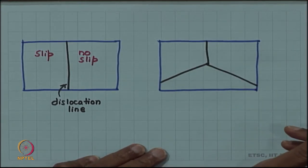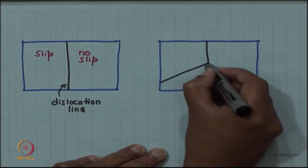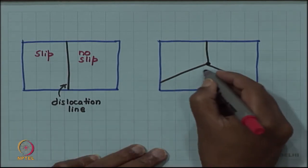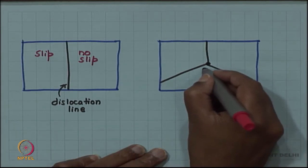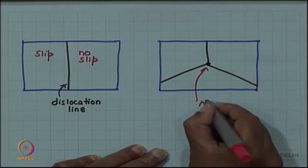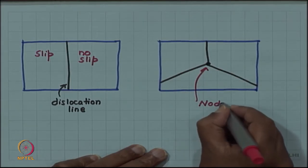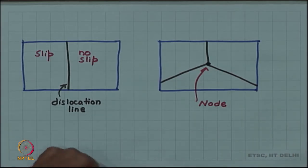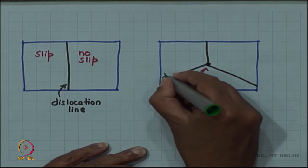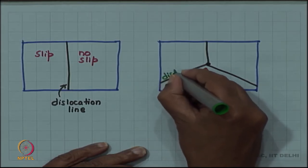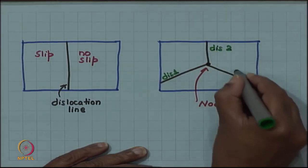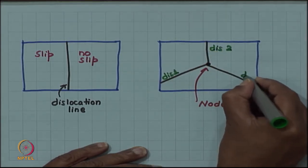Each of these lines can be a dislocation line meeting at a common point and that common point will now be called a node. This is a node, this is dislocation 1, this is dislocation 2 and this is dislocation 3.